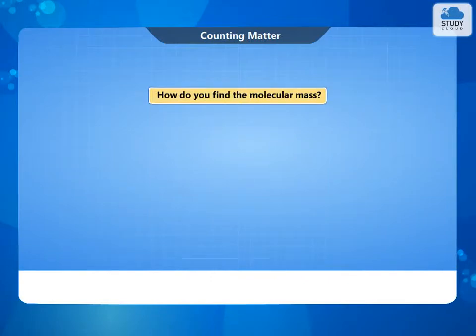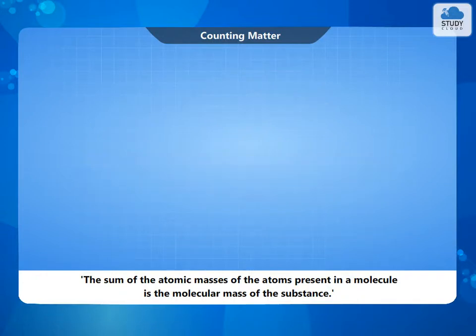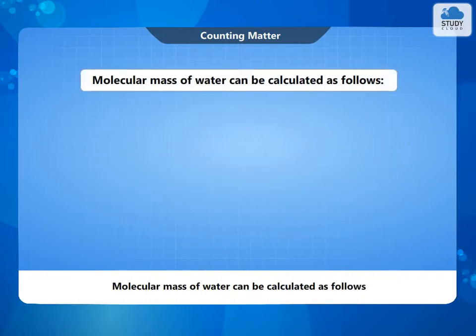How do you find the molecular mass? The sum of the atomic masses of the atoms present in a molecule is the molecular mass of the substance. The molecular mass of water can be calculated as follows.